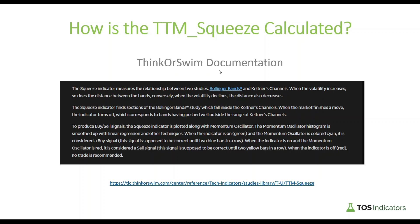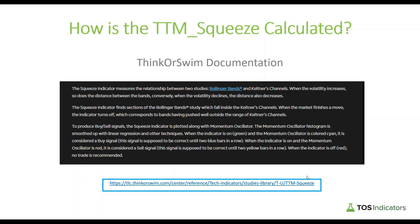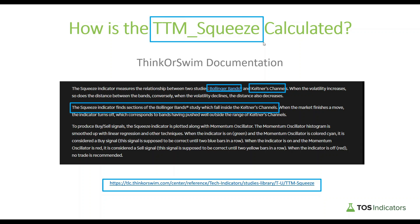Now we're going to start by reading the thinkorswim documentation for the TTM Squeeze, which helps us get to the source code. This is based off of the TLC thinkorswim website, which is a phenomenal resource for finding more about indicators and exact rules to program. In the case of TTM Squeeze, they tell you it's really a measure between Bollinger Bands and Keltner Channels and their relationship. The squeeze indicator finds sections where the Bollinger Bands fall inside the Keltner Channels — and that becomes the trigger code. While the TTM Squeeze code itself is hidden, we do have access to the Bollinger Bands and Keltner Channels source code to recreate our own version.